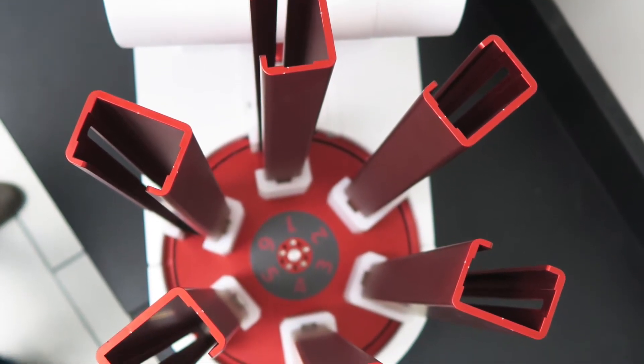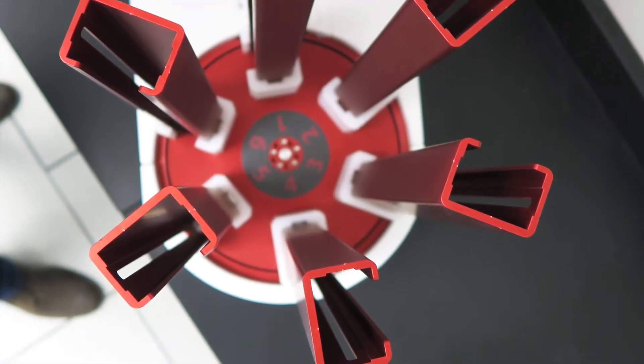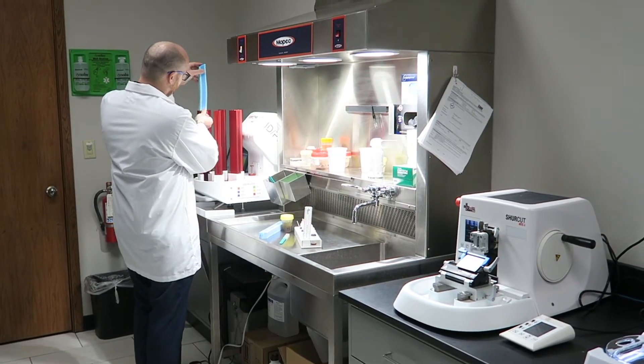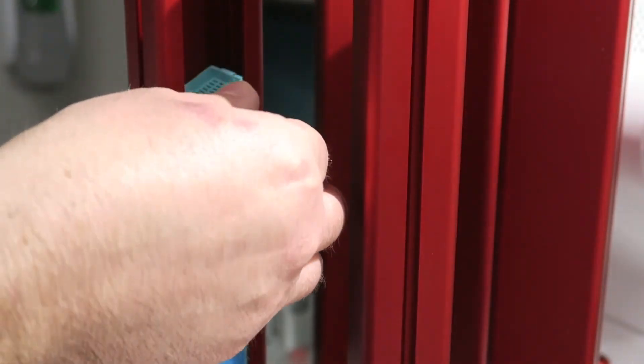The six cassette magazines each hold up to 60 cassettes for a total of 360 without refilling. Cassettes load easily into each magazine and come in handy pre-taped stacks for easy dispensing. All the operator does is fill and pull.